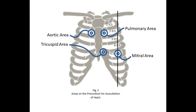This is your clavicle or collarbone. This sword-shaped structure in the center is your sternum. This is the manubrium of your sternum, and this is the xiphoid process of your sternum. These are your rib cages, and the spaces between them are called intercostal spaces.